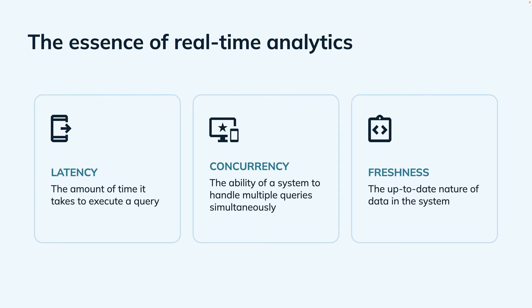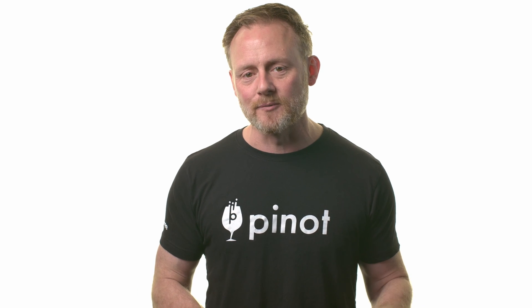Latency is just how long it takes to execute a query. Concurrency is how many different queries the database might be serving at one time — is it just a few or is it really a lot? And freshness, since this database is doing analytics on streaming data, freshness has to do with how much time goes by from the event happening out in the world until it's in the database and can show up in query results. So those three categories — latency, concurrency, and freshness — get at the heart and soul of what we mean by real-time analytics.